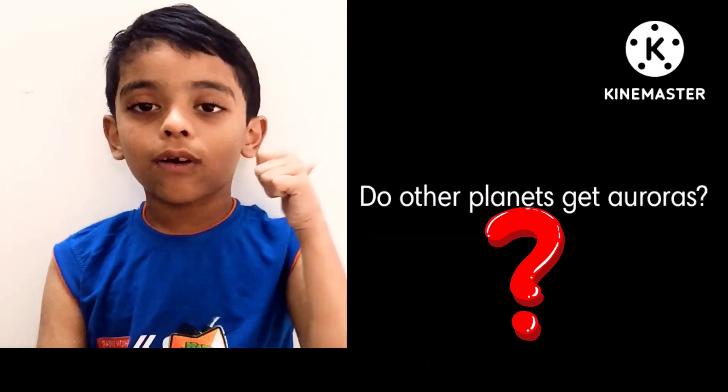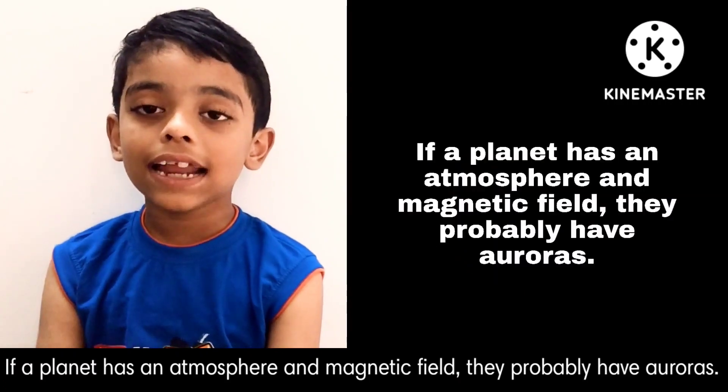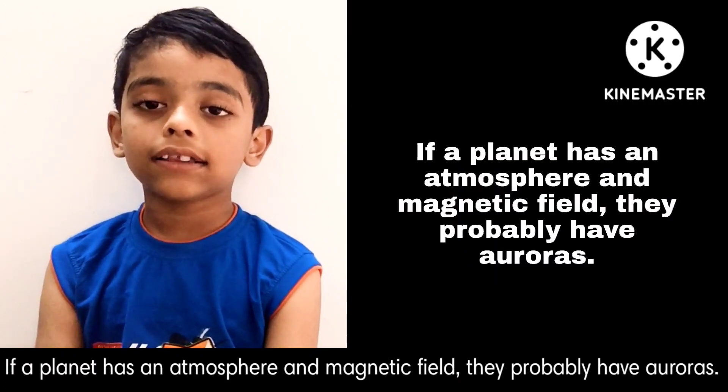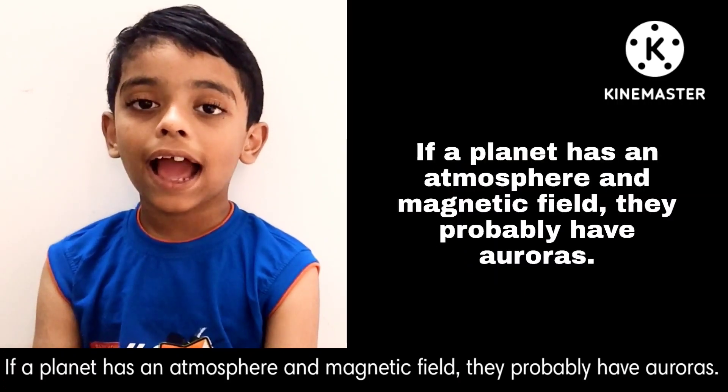Do other planets get auroras? Yes, if a planet has an atmosphere and magnetic field, they probably have auroras. This is how they look like on Saturn and Jupiter.